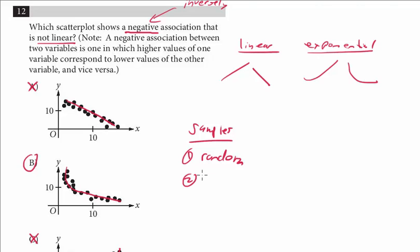And number two, the sample has to be the same. It has to be a subgroup, the exact same subgroup of the population. You will see questions on samples.